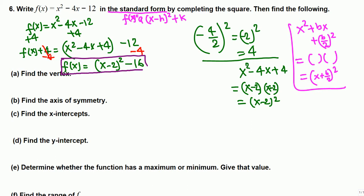Now we need to find the vertex. The vertex is (h, k). In our standard form, a equals 1 — there's no coefficient written, meaning it's 1. Comparing x minus h, we get h equals 2. The k value is negative 16, since we have plus negative 16. So the vertex is (2, negative 16).